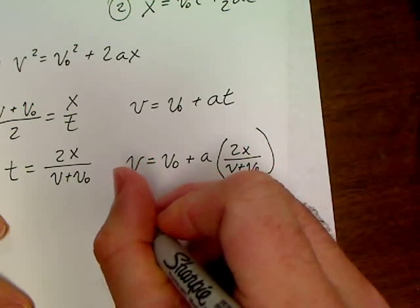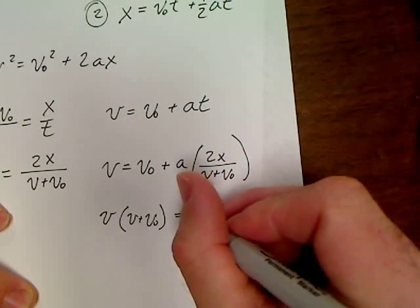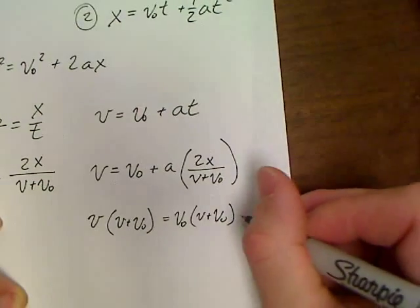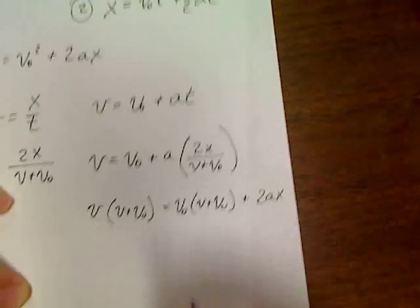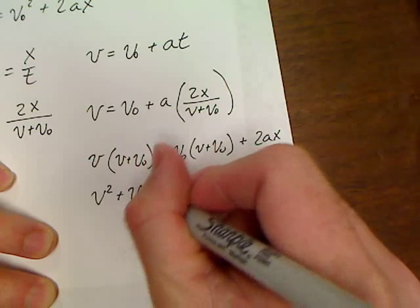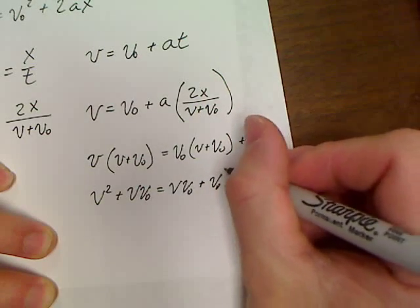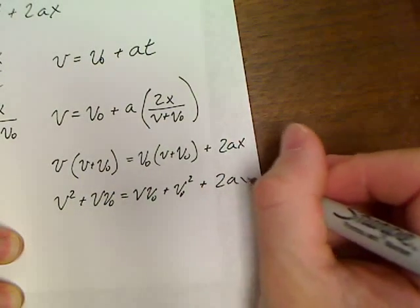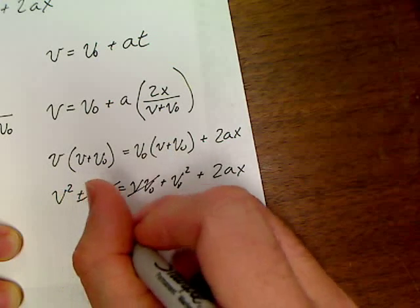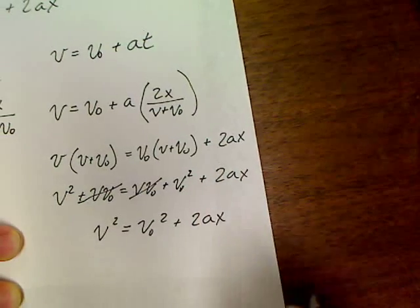This would become v times v plus vo equals vo times v plus vo plus 2ax. Well, this becomes v squared plus vvo equals vvo plus vo squared plus 2ax. vvo, vvo cancels. You're left with v squared equals vo squared plus 2ax.